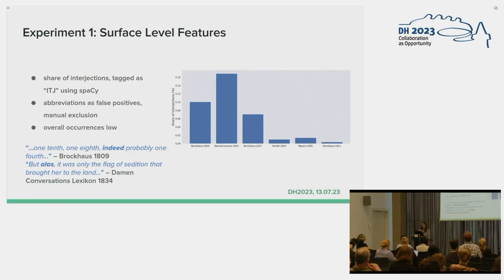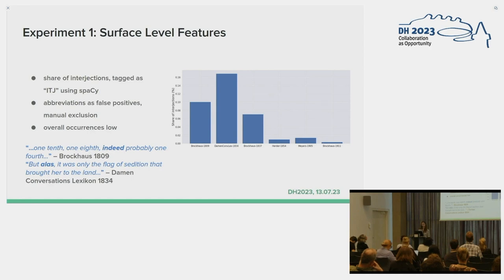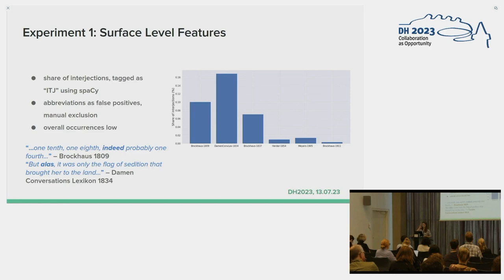Finally, we queried interjections, whose sole function is just to convey an emotion. We used spaCy to tag our entries and counted all word tokens tagged with ITJ. We found mostly abbreviations to be false positives, which we manually excluded. The overall occurrences are quite low, but again we see a decline. Interjections we found mostly were words like 'indeed' or 'alas'.